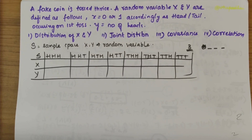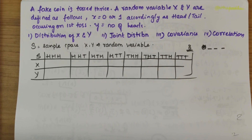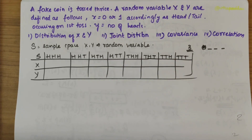In this video we will be solving a very important numerical related to the joint distribution topic. The problem statement says that a fair coin is tossed thrice and random variables X and Y are defined as: X equals 0 when head occurs and 1 when tail occurs on the first toss, and Y is the number of heads. We have to find the distribution of X and Y, the joint distribution, covariance, and correlation.